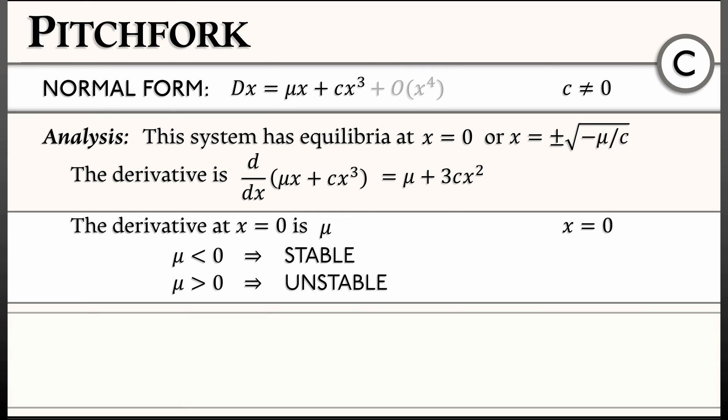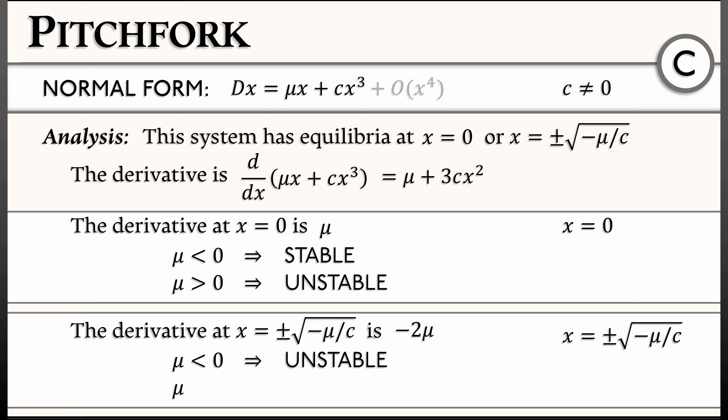On the other hand, when I evaluate this derivative at x equals plus or minus square root of negative mu over c, what I get is negative 2 mu. That means that when mu is negative, we have unstable equilibria, and when mu is positive, we have stable equilibria, depending on what the value of mu is, what the value of c is. You know the same story. Let's take a look, see what this system looks like.